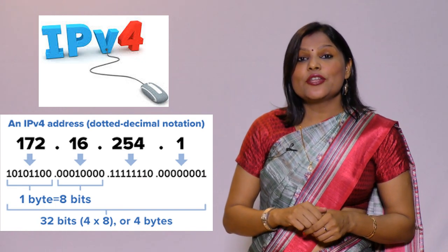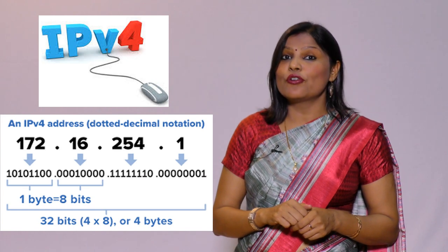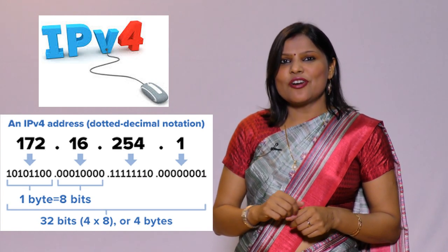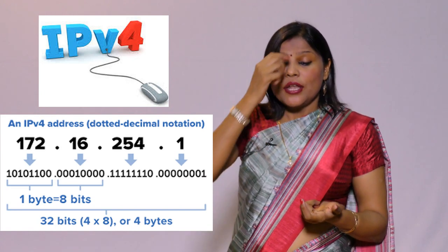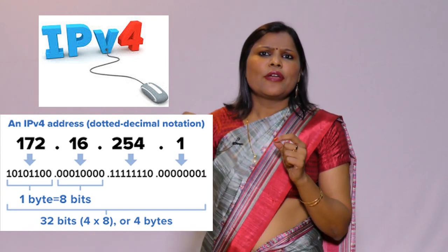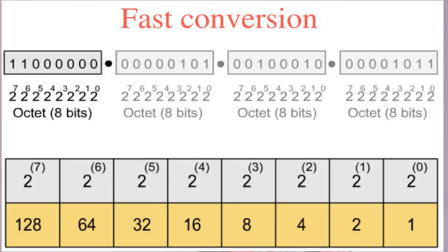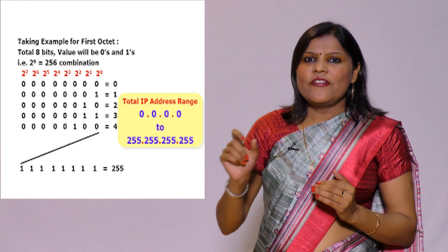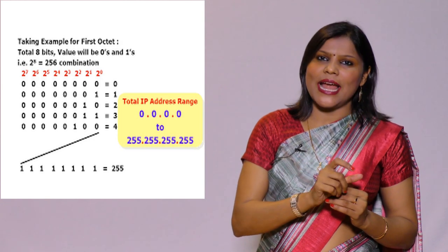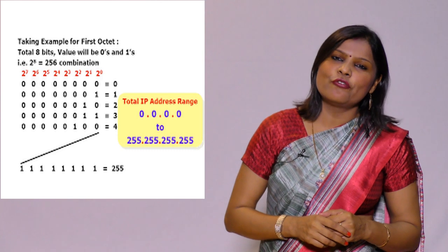IPv4 is of 32 bits. This address is divided into 4 blocks or 4 octets. Each octet, as the name suggests, means 8 bits. You can write it as 2 to the power 7, 2 to the power 6, down to 2 to the power 0. So if you turn on all the bits, the sum of all bits in an octet can be only 255 at the maximum. That is why every octet in an IPv4 address cannot be greater than 255.